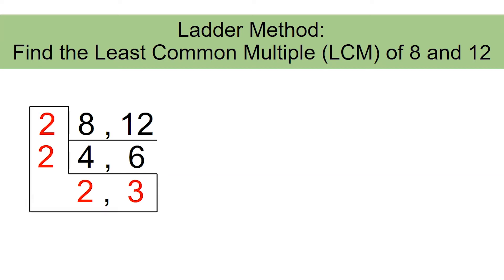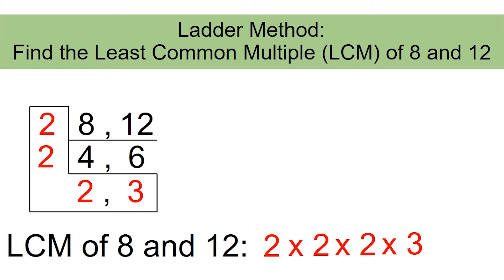Complete the L and to find the least common multiple we need to list all the numbers that are in red. 2 times 2 times 2 times 3. So the least common multiple of 8 and 12 is nothing but 2 times 2 times 2 times 3.